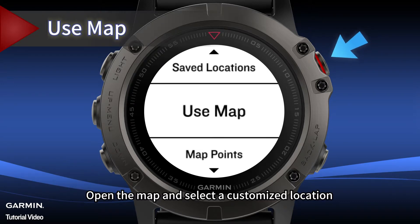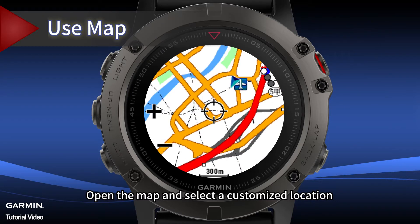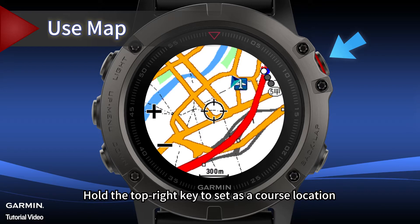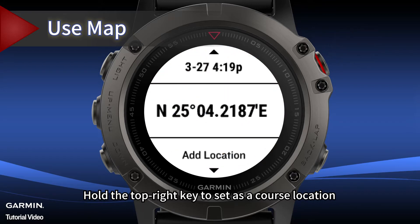You can also open the map and select Customize Location. Hold the top right key to set it as a course location.